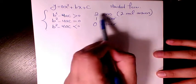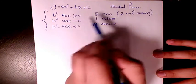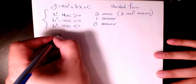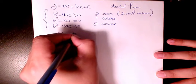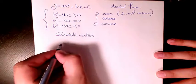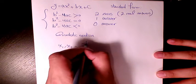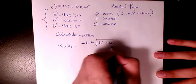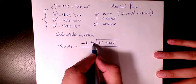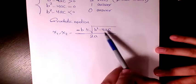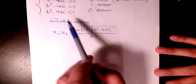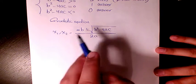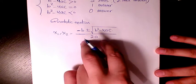Now we want to find the actual answers — the actual zeros, roots, or x-intercepts. We use the quadratic formula: negative b plus or minus square root of (b squared minus 4ac), divided by 2a. Notice the expression under the radical is the same discriminant. When it's negative there's no answer; when it's zero the whole thing becomes just negative b over 2a. That's how we find the points where the graph crosses the x-axis.